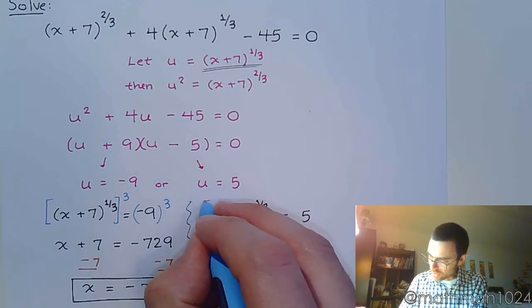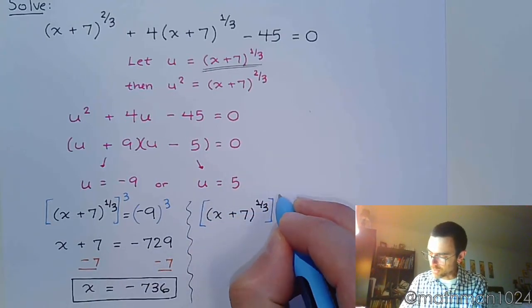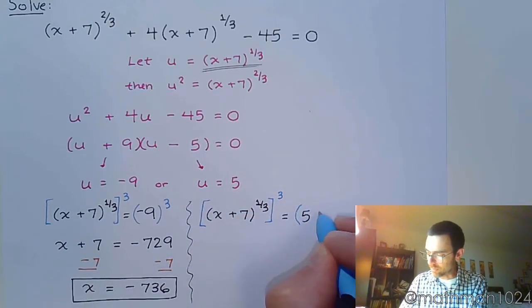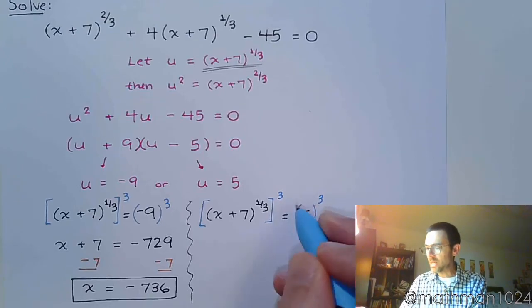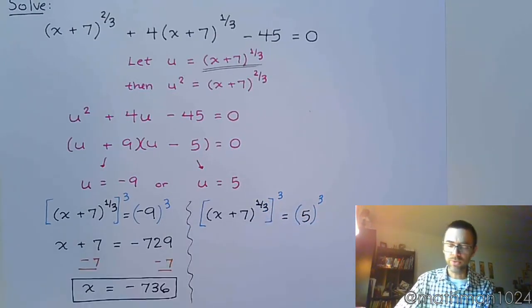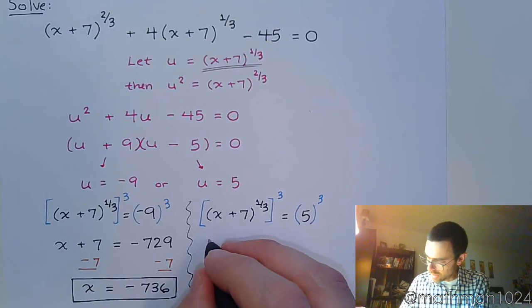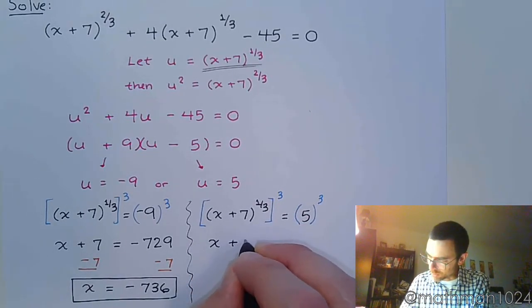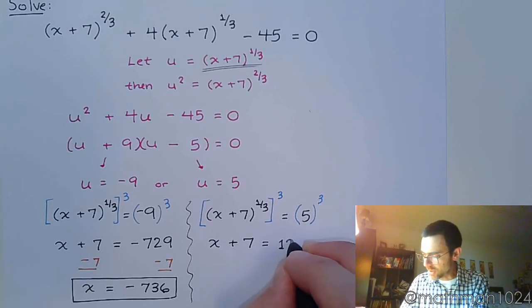So I finish this just like I did the first time by raising both sides to the 3rd power. And again, I'm not just picking this out of thin air. It's because that's the reciprocal of 1/3. So we are left with x plus 7. 5 to the 3rd is 125.